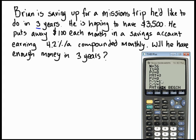I is the annual interest rate, which is 4.2, and it tells us to put it in as a percent — so not 0.042.